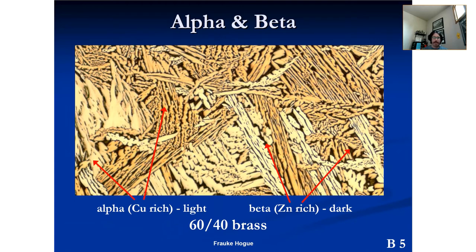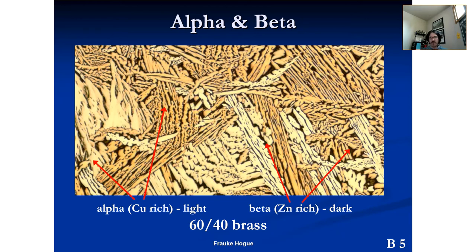Alpha and beta — this is 60-40 brass. So we're talking about two different phases. Alpha brass is a copper-rich phase; beta brass (the beta phase) is a zinc-rich phase. We see a difference when we etch it. This was taken with a color camera, so the contrast is a little different than we typically experience — not black and white this time. A lot of the interpretation of this stuff is looking at the differences between lighter and darker regions.